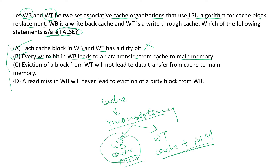The third statement says eviction of a block from a write-through cache will not lead to data transfer from cache to main memory. In write-through cache, the write operation happens parallelly in both the cache and the main memory, so the eviction of a block will not lead to a data transfer. Hence this statement is correct.